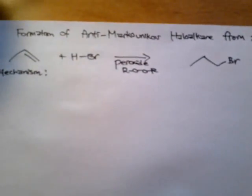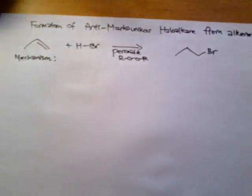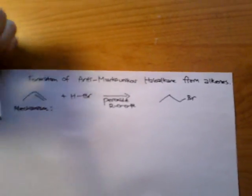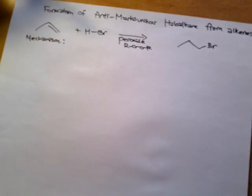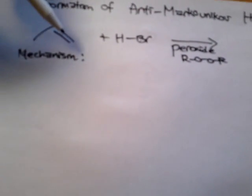Today I'm going to go over the formation of anti-Markovnikov haloalkane from alkenes. When we were trying to form haloalkane from alkenes, and now I'm talking about the Markovnikov product, the bromine would be added in this position, the secondary carbon, instead of the primary carbon.